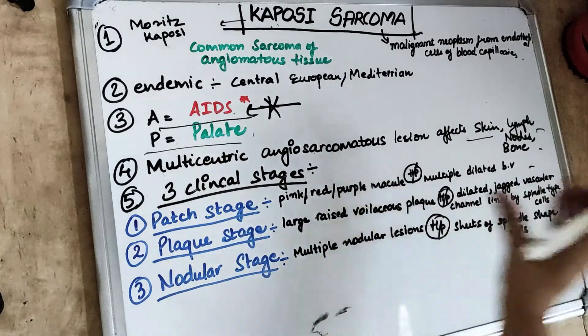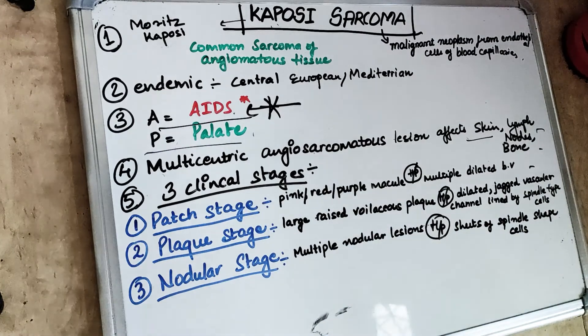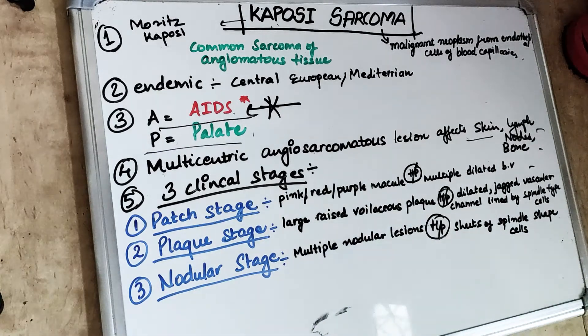Kaposi Sarcoma is a multicentric angiosarcomatous lesion — a malignant neoplasm of the endothelial cells of the blood capillaries.